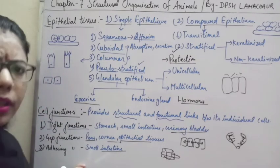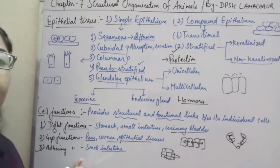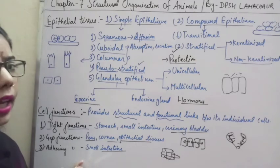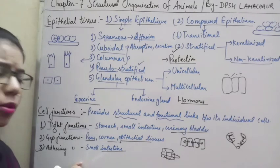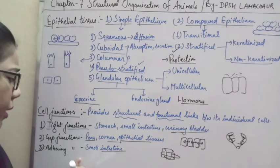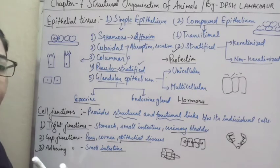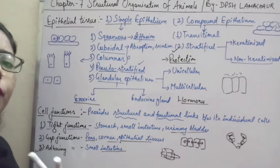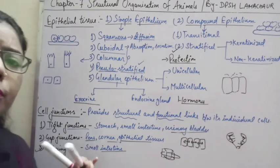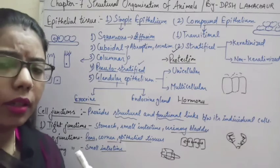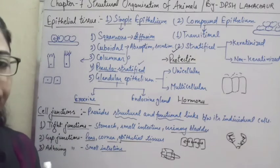Along with these three junctions, there are also desmosomes and hemidesmosomes. In desmosomes, protein plugs are present from only two sides, unlike adhering junctions where they surround from all sides.